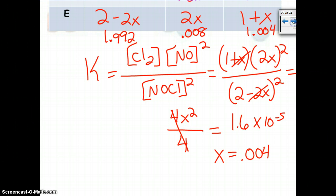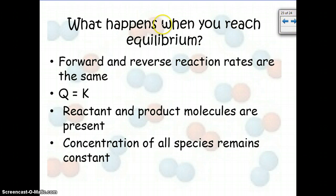All righty then. All right, so what happens when you reach equilibrium? Forward and reverse reaction rates are the same, Q and K are the same thing, the reactant and product molecules are both present, and the concentration of all the species remains constant over time.